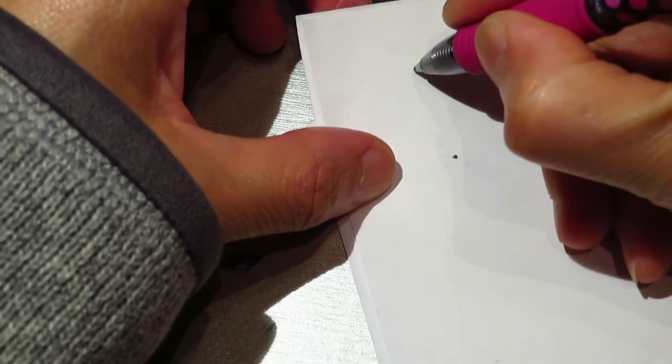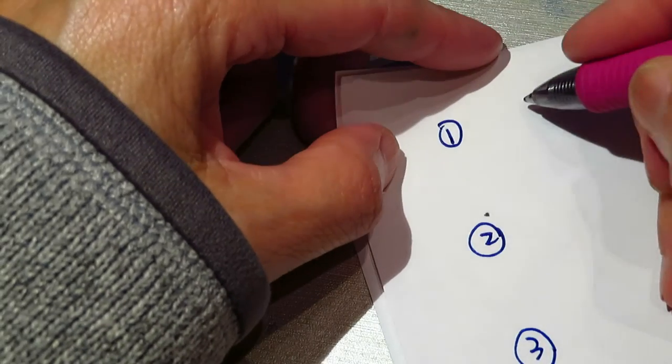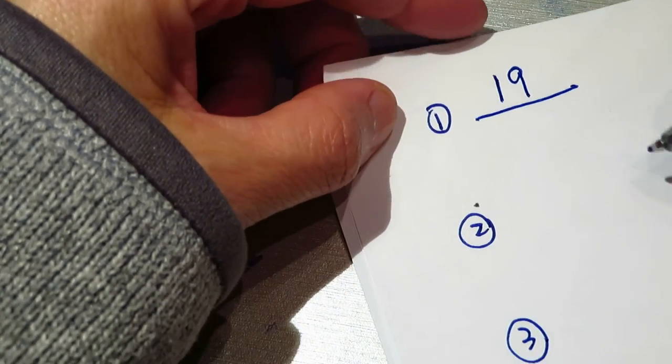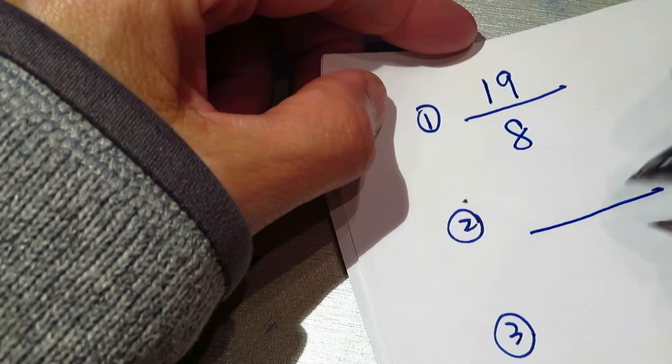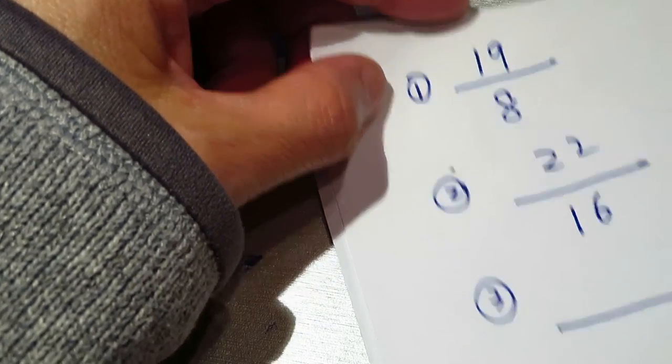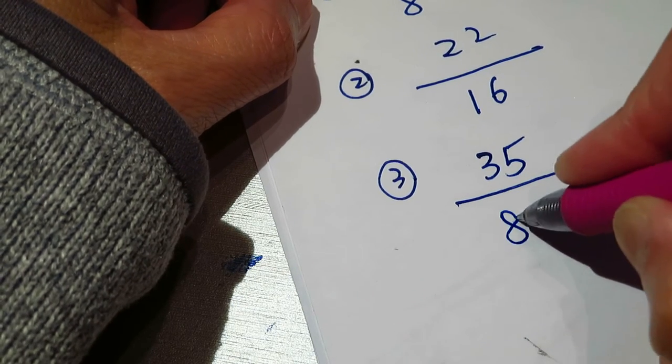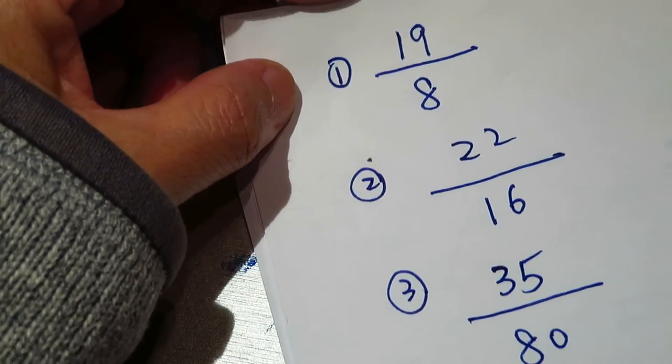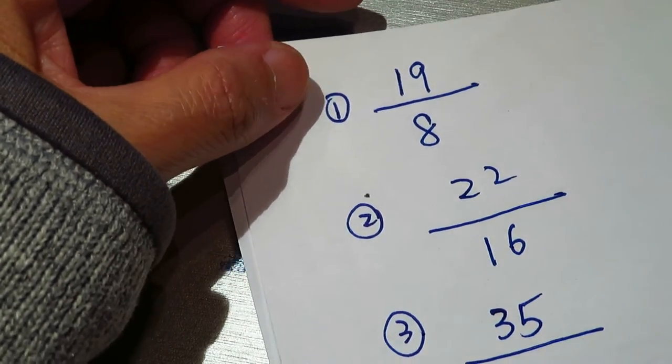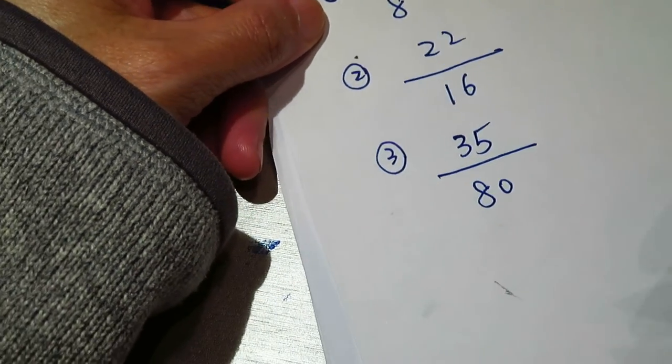Okay, we do some a little bit more complicated numbers. This one, 19 divided by 8.